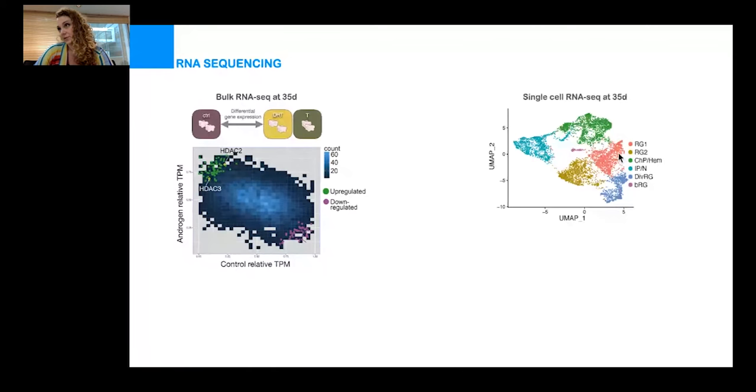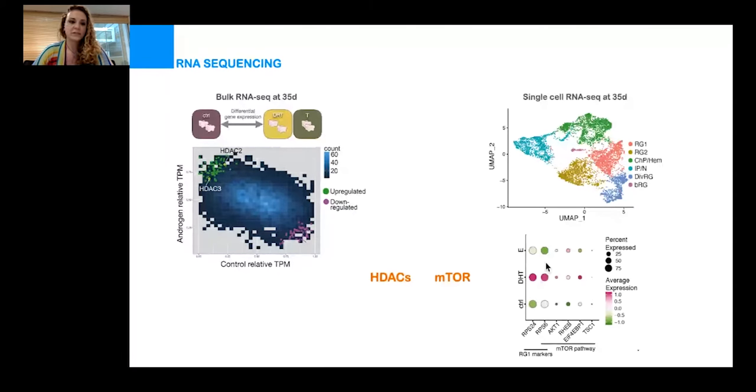We detected several subpopulations of radial glia, and one of them, RG1 (radial glia 1), here in red, was significantly increased in organoids treated with DHT. What was very important and special about this subpopulation of radial glia was that it has elevated expression of ribosomal biogenesis genes. These are just some of them.